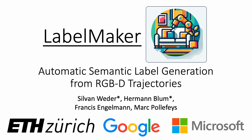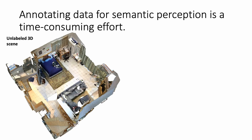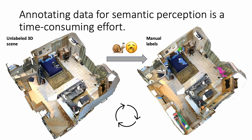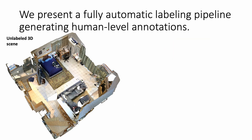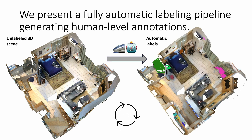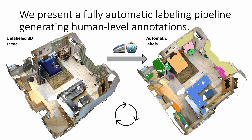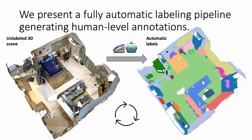We present LabelMaker, an automatic semantic label generation pipeline. Semantically annotated data is essential for training and evaluating semantic perception methods in robotics and other applications of computer vision. However, annotating data is expensive as it is very time-consuming and slow. We present a fully automatic labeling pipeline that generates human quality annotations. It can be used to quickly generate semantic labels from RGBD trajectories with zero human effort.